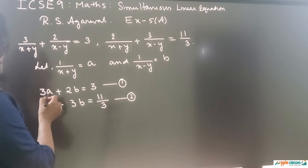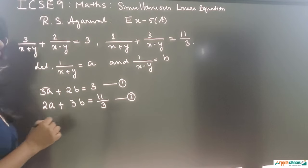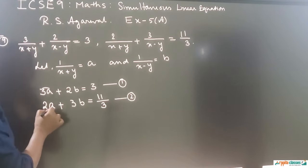The coefficients are reversed: coefficient of A is 3 in equation 1 and coefficient of B is 3 in equation 2; B is 2 and A is 2 respectively. So we multiply equation 1 by 2 and equation 2 by 3. Equation 1 becomes 6A plus 4B equals 6, and equation 2 becomes 6A plus 9B equals 11 (since 11/3 times 3 is 11).